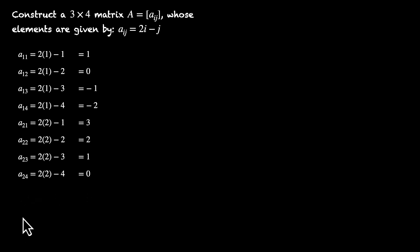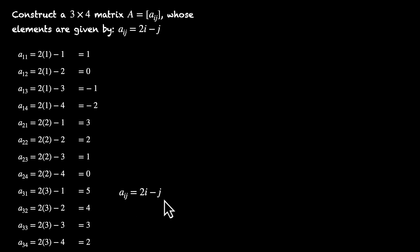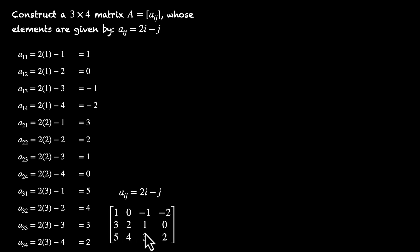Finally, the last row. A31: 6 minus 1 = 5. A32: 6 minus 2 = 4. A33: 6 minus 3 = 3. A34: 6 minus 4 = 2. Now we have all 12 elements. The matrix Aij = 2i minus j becomes [1, 0, -1, -2; 3, 2, 1, 0; 5, 4, 3, 2]. That's our answer.